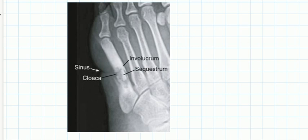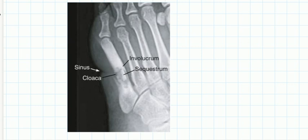Here is another example image. This is the fifth metatarsal of a little toe which has got infection. The white piece you see is what you call a sequestrum. Once you identify the sequestrum, look all around — there is increased density everywhere around this cavity.